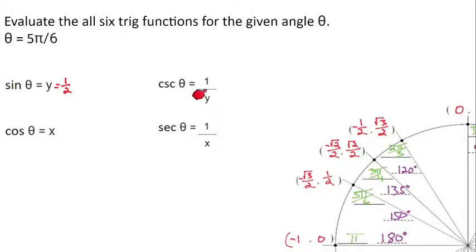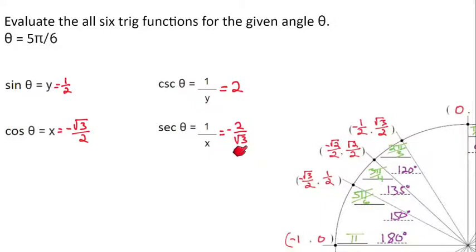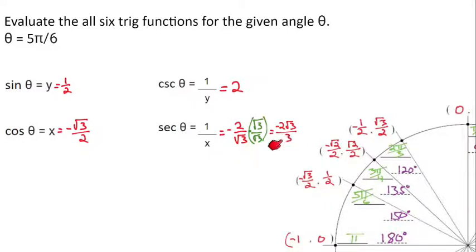The reciprocal function, cosecant, is just the reciprocal of 1/2 — flipping 1/2 gives us 2. To find cosine of 5π/6, we look at the x-coordinate, which is −√3/2. Then to find secant, that's the reciprocal, which gives us −2/√3. But we can't leave a radical in the denominator, so we rationalize by multiplying by √3/√3 — a fancy 1. That gives us −2√3/3, since √3 × √3 = √9 = 3. This simplified form is considered the proper answer.